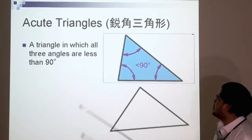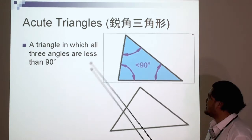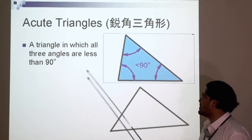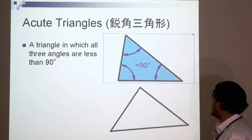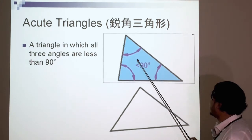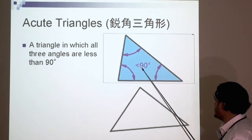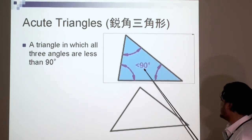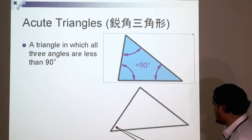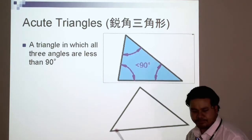Acute triangles. What is an acute triangle? It's a triangle in which all angles are less than 90 degrees. So this angle is less than 90, that angle is less than 90 degrees, and that angle is less than 90 degrees. Here's another example here. They're all less than 90 degrees. Acute.